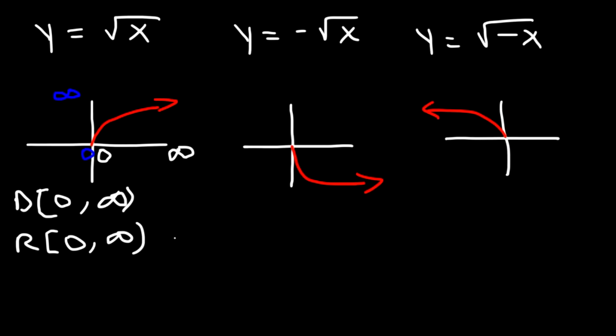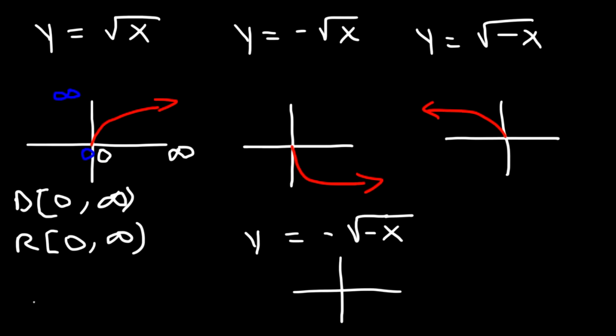Now if you put two negative signs — one in front and one inside the square root function — this is going to reflect over the origin.